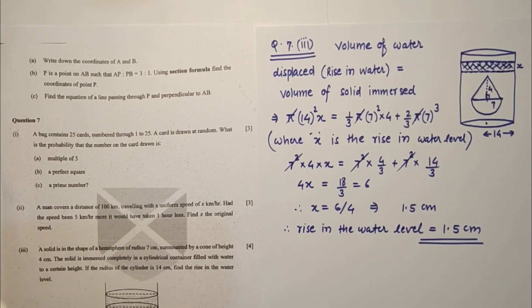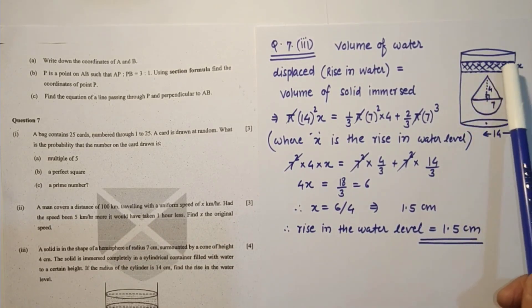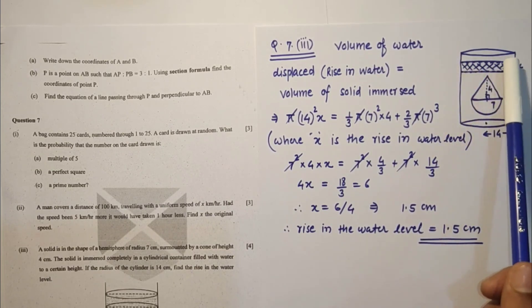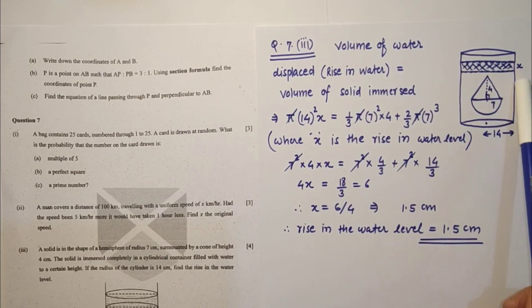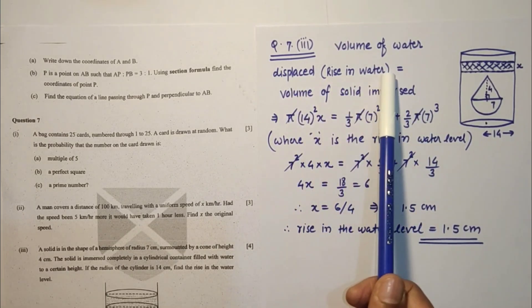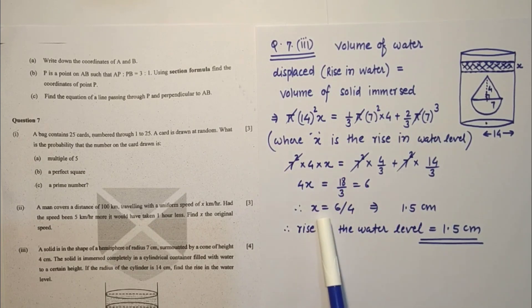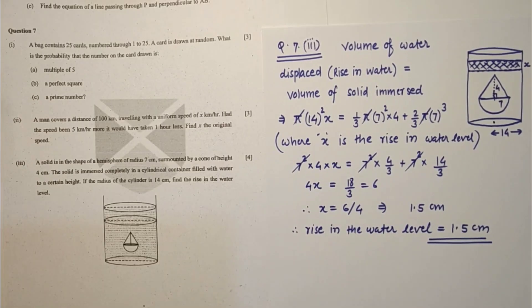Question number 7 third sub part. This is given in the diagram. If this solid is immersed in this, then this is the water displaced and this is the volume. This is in the form of cylinder only, so pi R square X where X is the water rise level. Volume of solid immersed equals volume of water displaced. Using this fact we found this, so 1.5 centimeters. Rise in the water level is 1.5 centimeters, this is the answer. This is the diagram here and here.